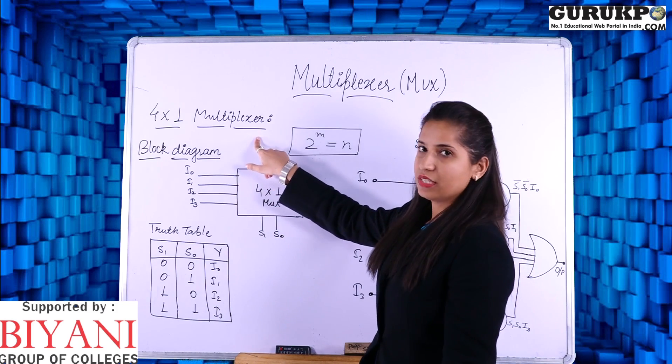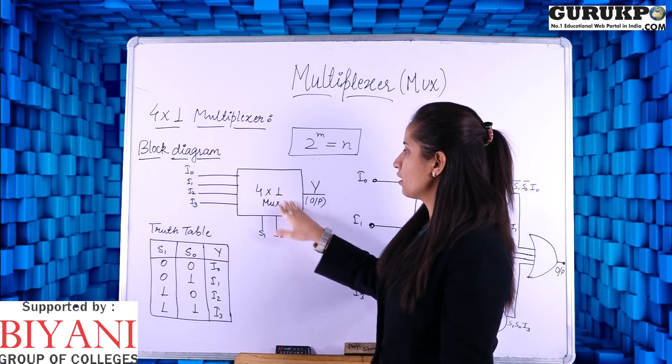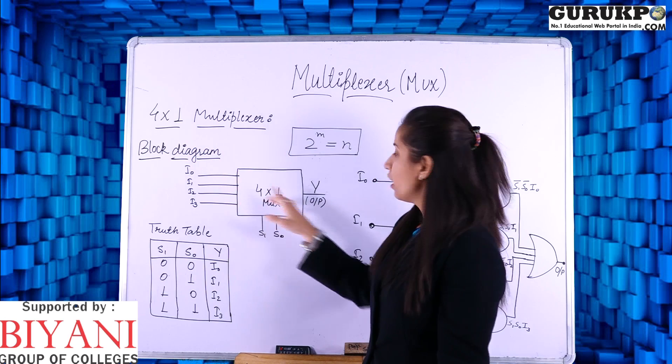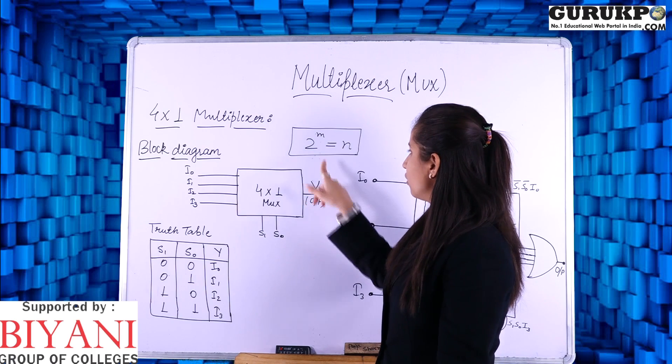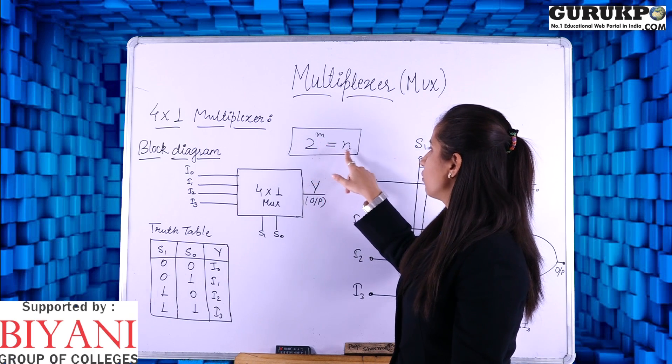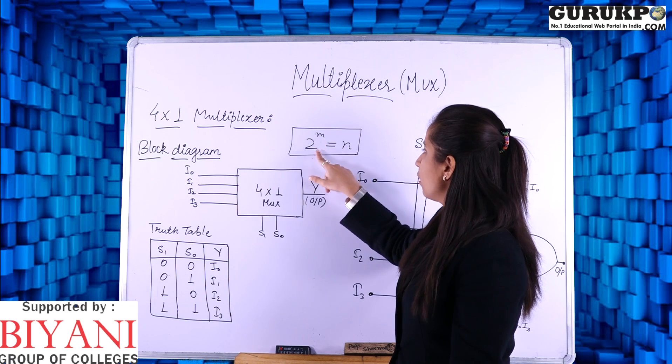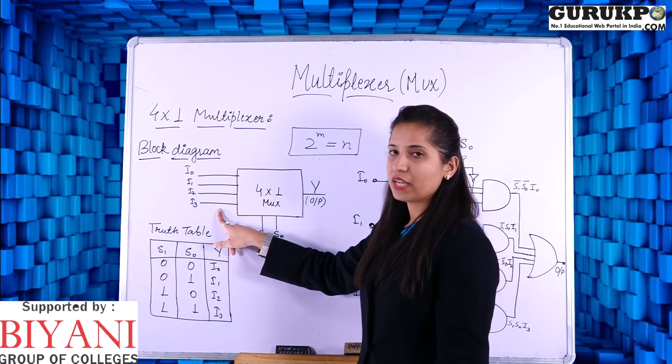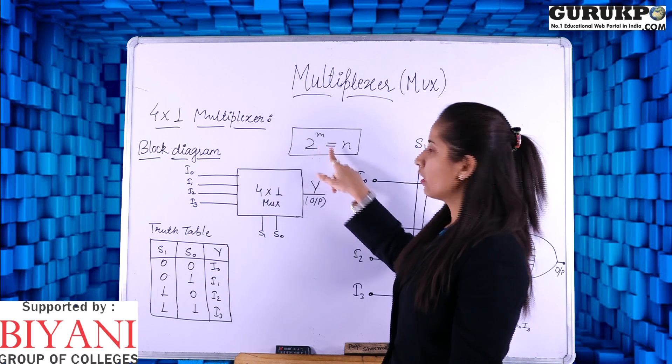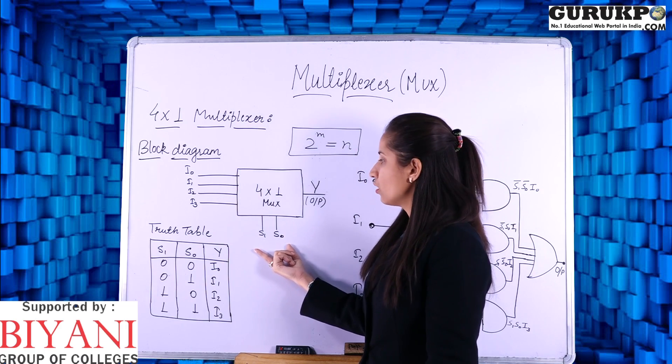As the name itself suggests it will have 4 inputs and 1 output. 4x1 MUX, in this we have 4 inputs that is I0, I1, I2 and I3 and 1 output Y. According to the formula you can calculate number of select lines. 2 to the power m is equal to n, n is number of input lines, m is number of select lines. If we have 4 inputs I0, I1, I2 and I3, number of select lines will be 2 to the power 2 which gives 4. So select lines will be 2. Here I am using S1 and S0.